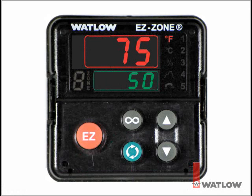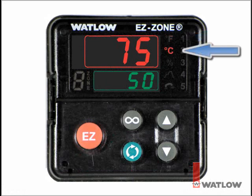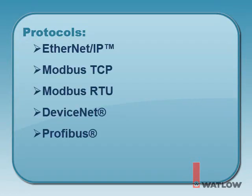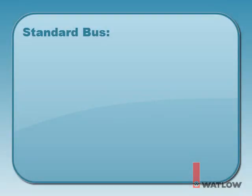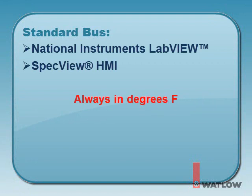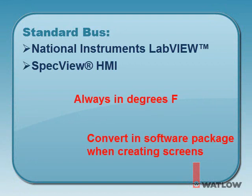EasyZone models with a seven-segment display may be set to display temperature-related information in degrees Fahrenheit or Celsius. Models utilizing serial or Ethernet protocols may be set independently to transfer temperature-related information in degrees Fahrenheit or Celsius. Models using standard bus serial communications with National Instruments LabVIEW or SpecVIEW HMI software will always transfer temperature-related information in degrees Fahrenheit. These software packages have means within them to perform temperature conversion if required.